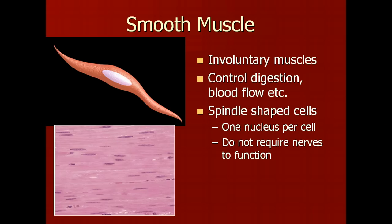Smooth muscles do not require nerves to function. So if a nerve that goes to a smooth muscle is cut, the smooth muscle will continue to function in the absence of that nerve.